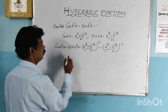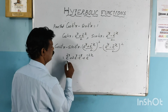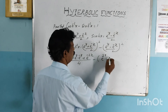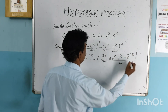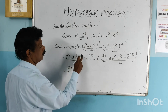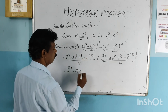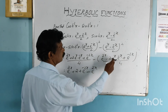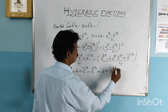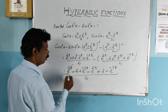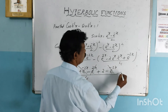Expanding using the algebraic identity (a+b)² and (a-b)²: the numerator becomes e raised to 2x plus 2 times e raised to x times e raised to minus x plus e raised to minus 2x, minus e raised to 2x minus 2 times e raised to x times e raised to minus x plus e raised to minus 2x, all divided by 4. Since e raised to x times e raised to minus x equals e raised to 0 equals 1, we get 2 plus 2 equals 4. The e raised to 2x and e raised to minus 2x terms cancel. So 4 divided by 4 equals 1.